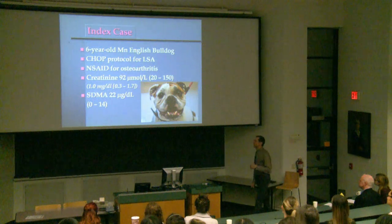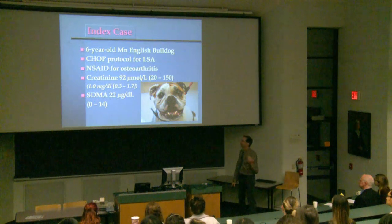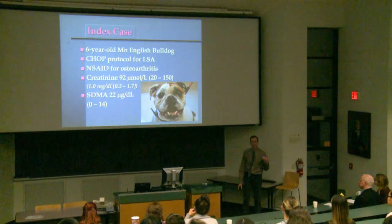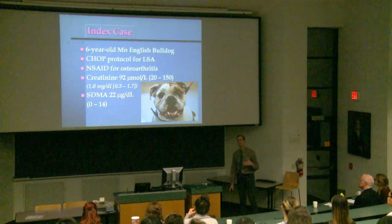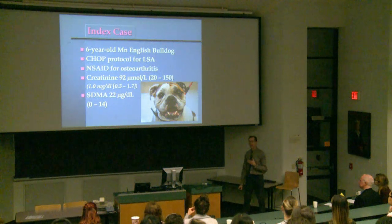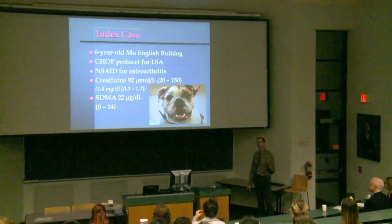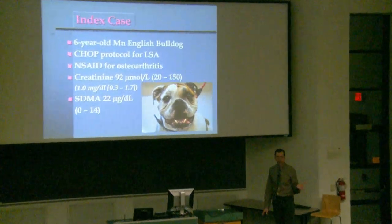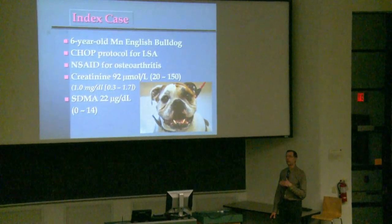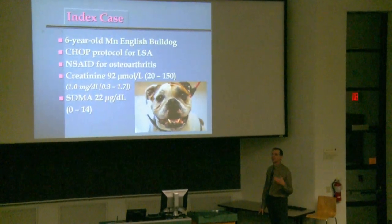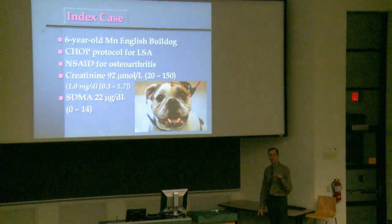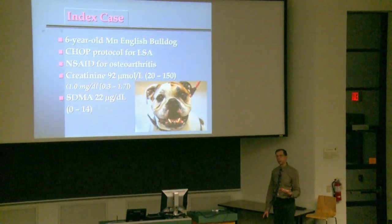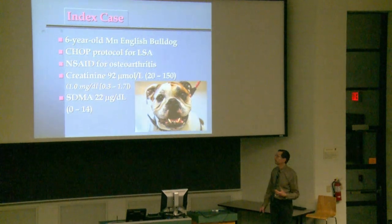Unlike creatinine, which comes strictly from muscle, SDMA comes from all cells. Therefore, in animals with muscle wasting, SDMA is a better biomarker of kidney function than creatinine. Louie's SDMA was elevated and disproportionate to creatinine, which is unusual since most dogs have proportional values. When Louie achieved complete remission, SDMA dropped from over 20 down to 8 — a significant decrease.